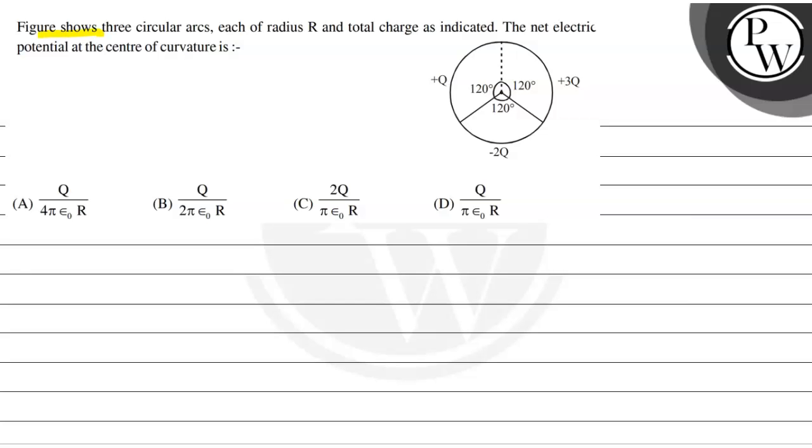The question says that figure shows three circular arcs, each of radius R and total charge as indicated. The net electric potential at the center of curvature is: q upon 4 pi epsilon 0 r, q upon 2 pi epsilon 0 r, 2q upon 4 epsilon 0 r, or q upon 4 epsilon 0 r.